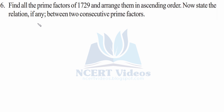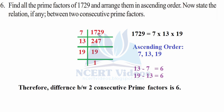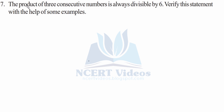Question 6: Find all the prime factors of 1729 and arrange them in ascending order, then state the relation between two consecutive prime factors. The prime factorization gives 7, 13, and 19. In ascending order: 7, 13, 19. Observing the differences: 13 − 7 = 6 and 19 − 13 = 6, so the common difference between consecutive prime factors is 6.